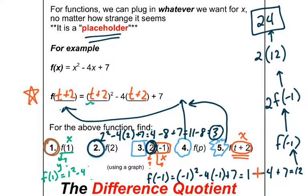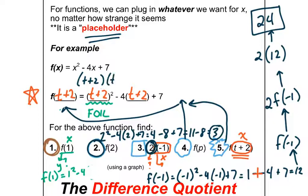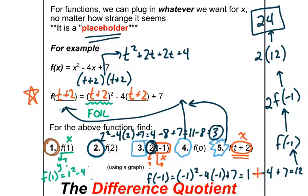Now we've got to do some algebra. Whenever you have to square two terms, you have to FOIL — you cannot just distribute the squared into both pieces. So think of (t+2) squared as (t+2) times (t+2). FOILing that gives: t times t is t squared, outsides and insides each give a 2t, and last terms give plus 4. That's t squared plus 4t plus 4.